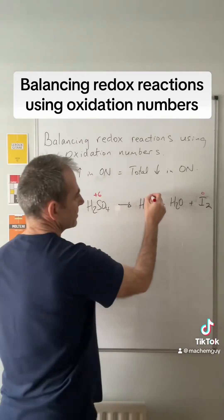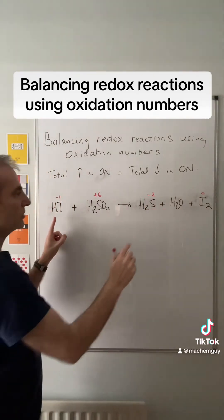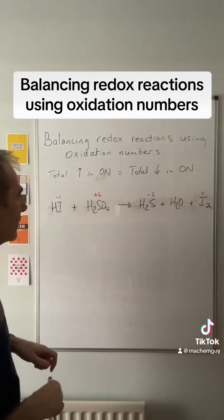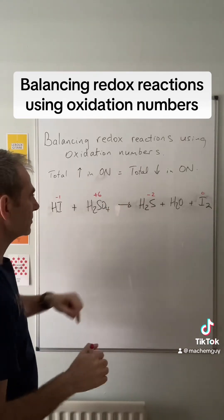The sulfur starts out as plus six and it's dropped to minus two, so we've got a change of eight. We've got a change of one versus a change of eight, so obviously we can't have that.